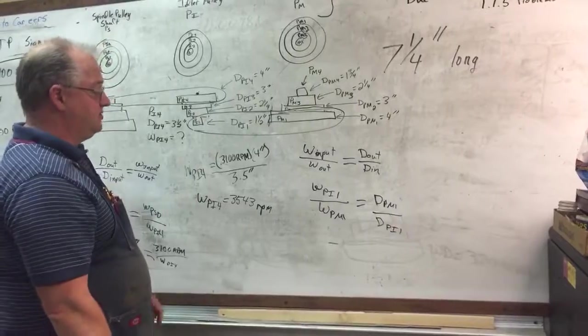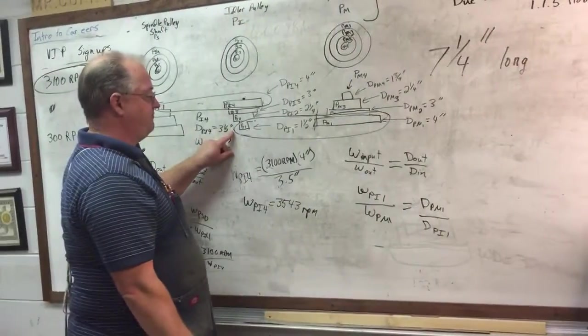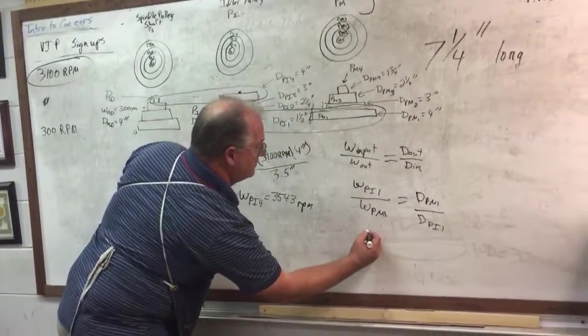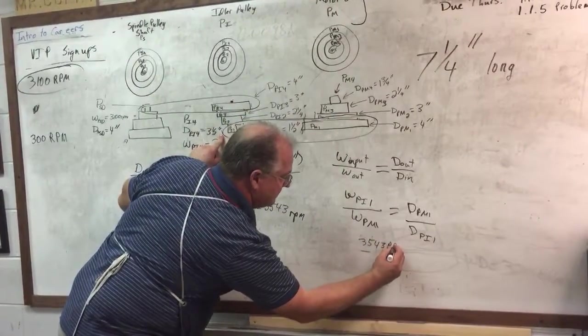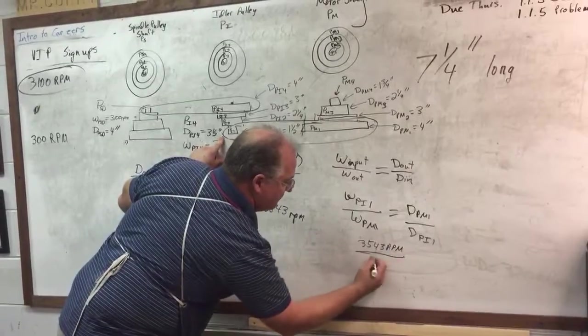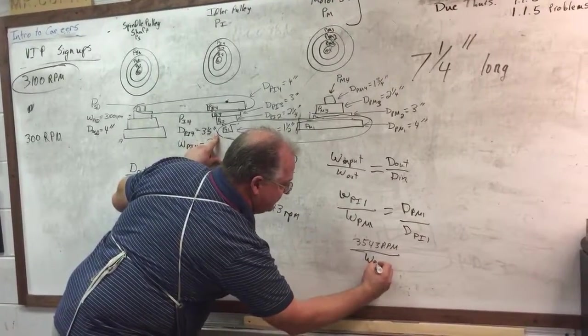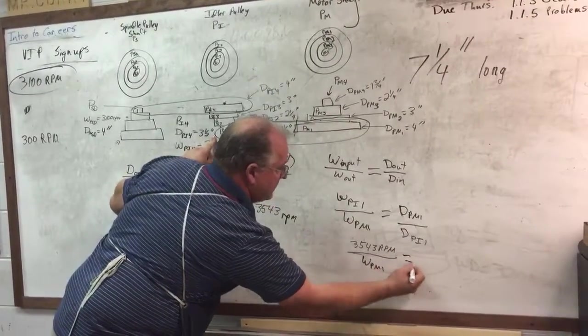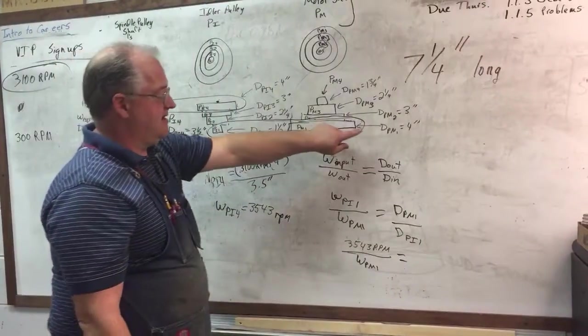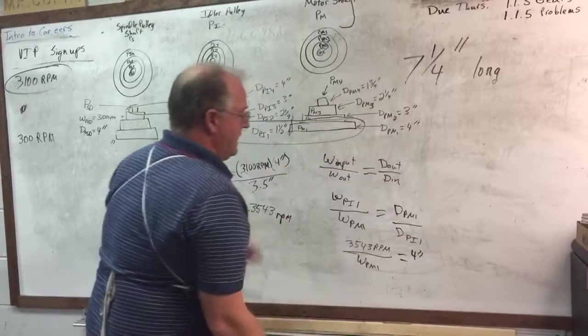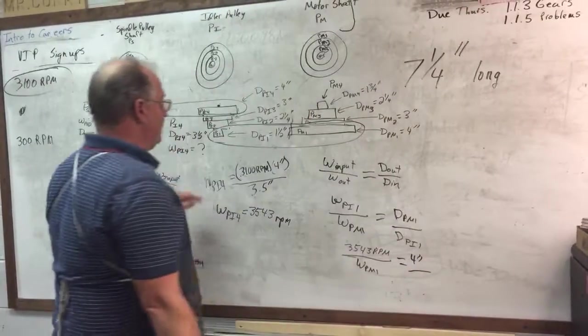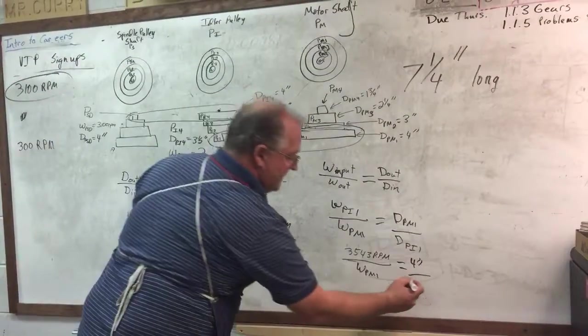Now I substitute. We know W of PI1 was 3,543 RPM. We are looking for W of PM1. My diameter of PM1 is 4 inches. And my diameter of PI1 is 1 and 1/2 inches.